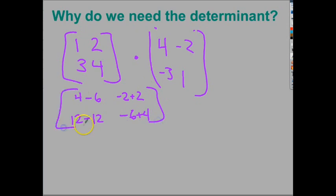So, when I work all that out, my result gives me negative 2, 0, 0, and negative 2.